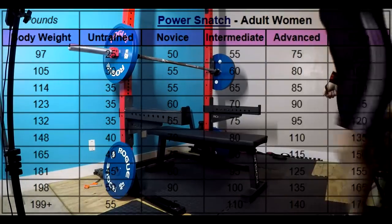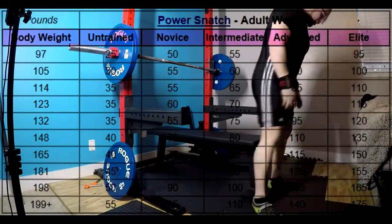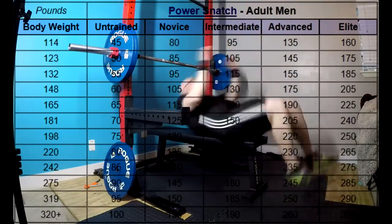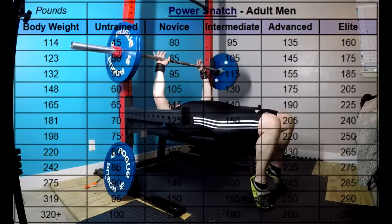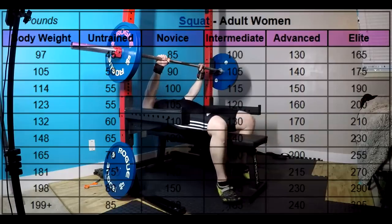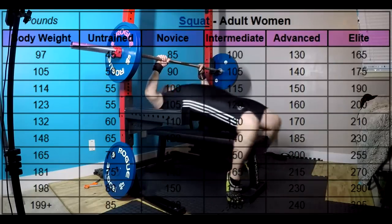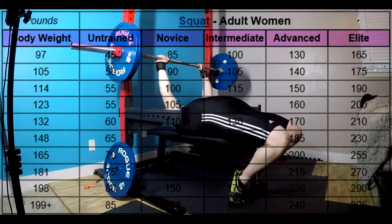And this has been recognized forever in the strength and conditioning world. This is why strength sports use a Wilks score to measure people cross weight class and to measure people in the same weight class. Like they don't use multipliers. They use the Wilks score.